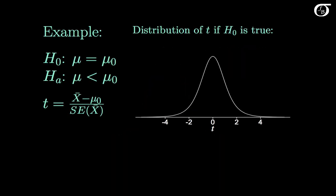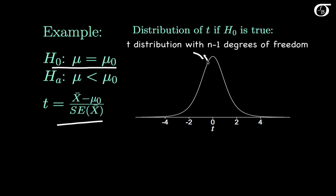After we construct the appropriate test and get our test statistic, we're going to want to find a p-value. So let's look at a few examples. If we're testing the null hypothesis that mu is equal to mu0 using this test statistic and we're sampling from a normally distributed population, then the distribution of this test statistic, if the null hypothesis is true, is a t-distribution with n-1 degrees of freedom.